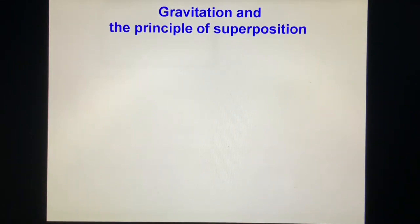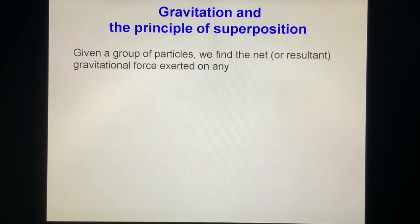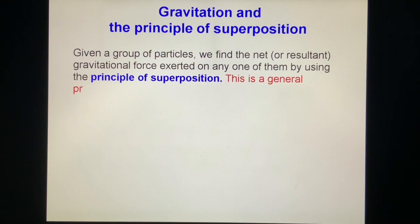Gravitation and the Principle of Superposition. Given a group of particles, we find the net or resultant gravitational force exerted on any one of them by using the Principle of Superposition. This is a general principle that says a net effect is the sum of the individual effects.